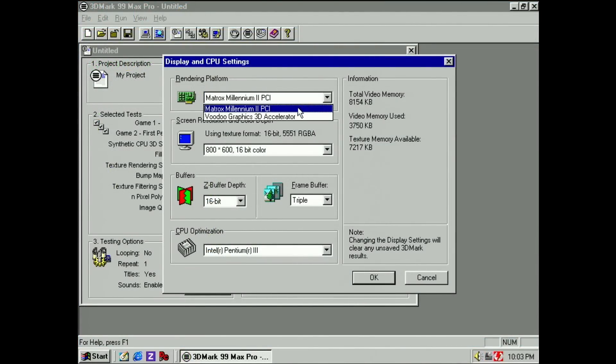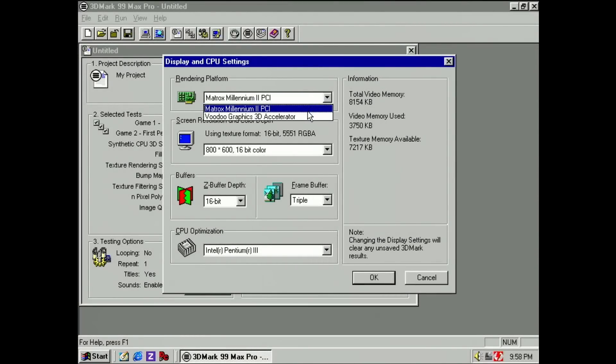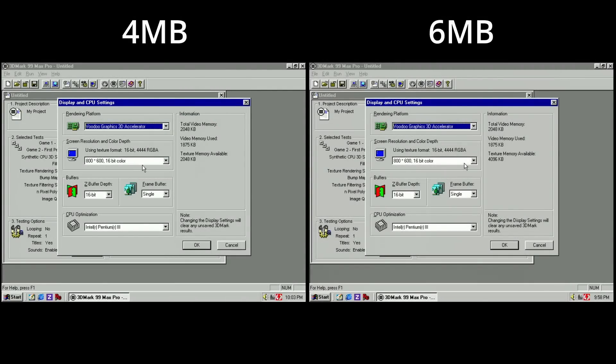Let's move on to do some benchmarks with 3DMark99. Without the additional memory, 3DMark99 reports 2MB of video memory and 2MB of texture memory. With the memory expansion card, we still get 2MB of video memory. But now we get 4MB of texture memory. That's amazing! And I'm super happy that it seems like this Voodoo card is now a 6MB model. For real!